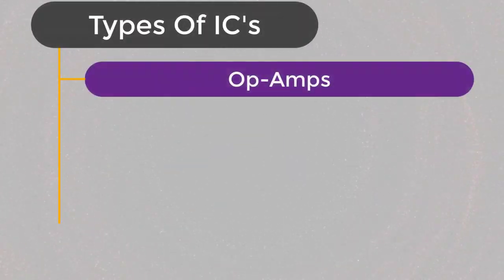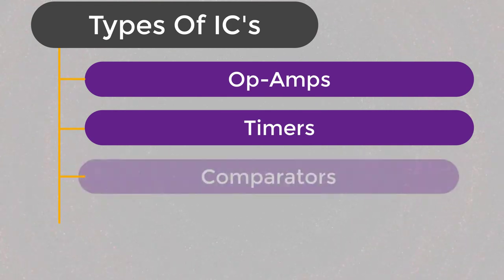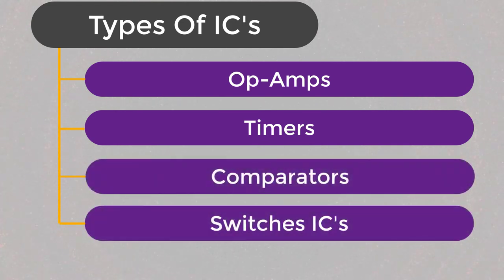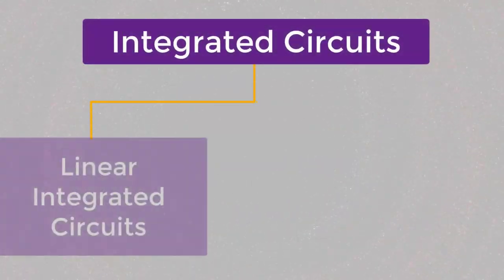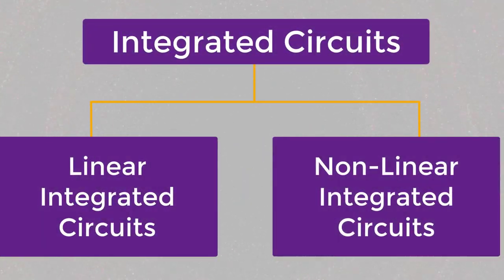Mostly used ICs in electronic circuits are op-amps, timers, comparators, switch ICs, and so on. These can be classified as linear and non-linear ICs depending on their application.